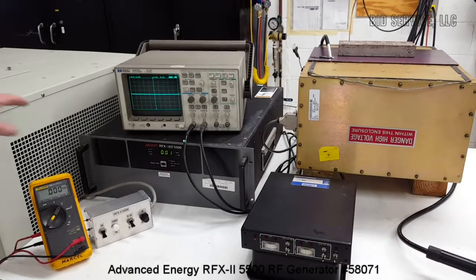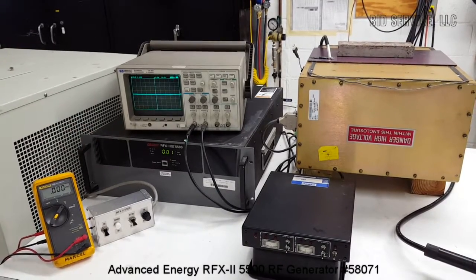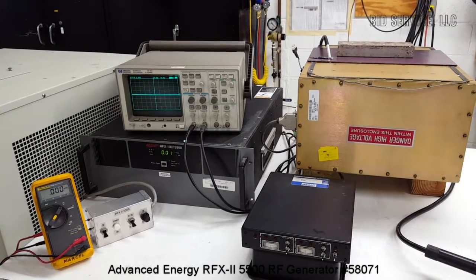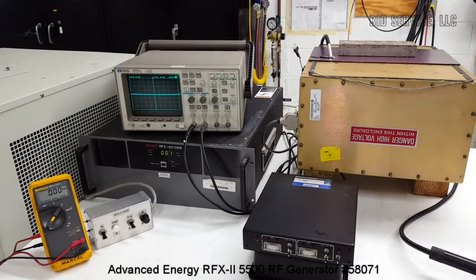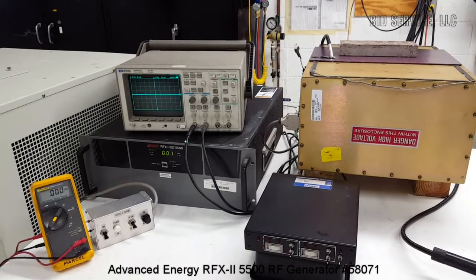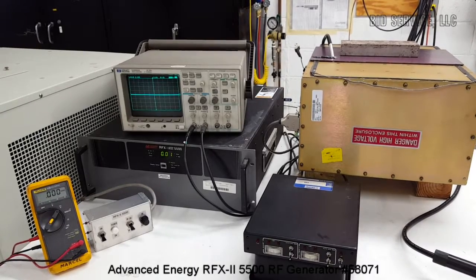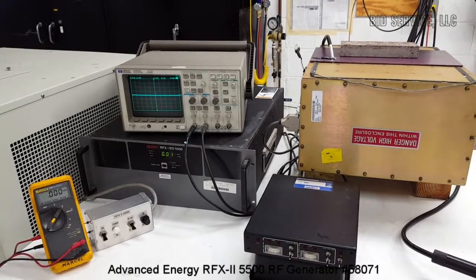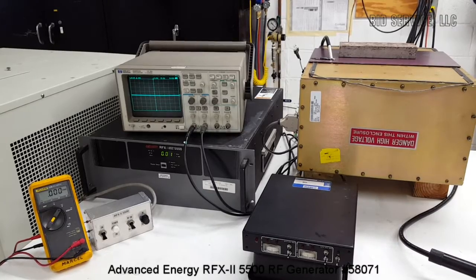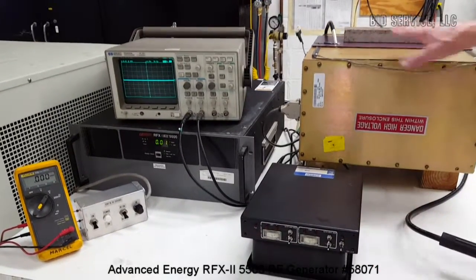This particular model is intended to be used with a matching network. The matching network that's being used is the RF Plasma Products Model 7621020040. This unit is powered by standard 120 volts AC with a maximum rating of 5000 watts.